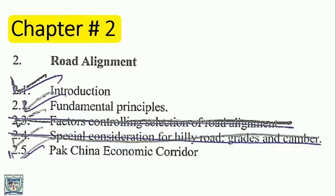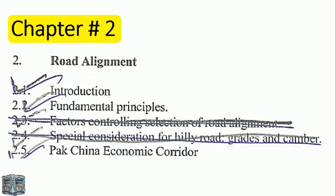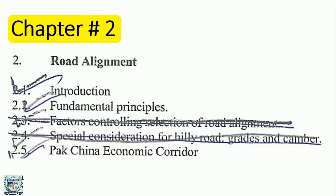Chapter 2: Road Alignment. Topics include factors controlling selection of road alignment, special consideration for hilly roads, grades, and camber.